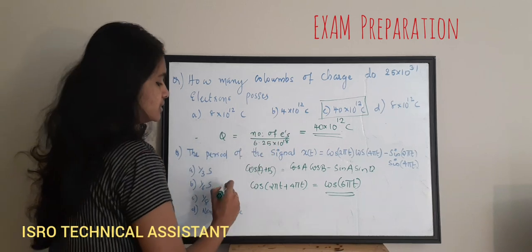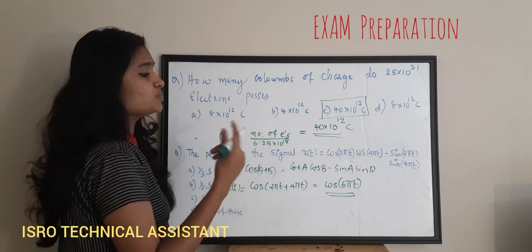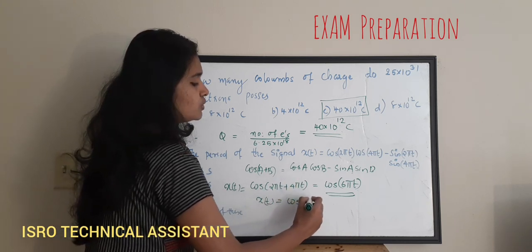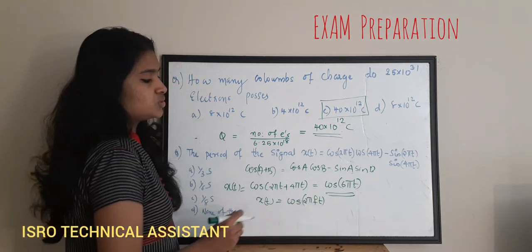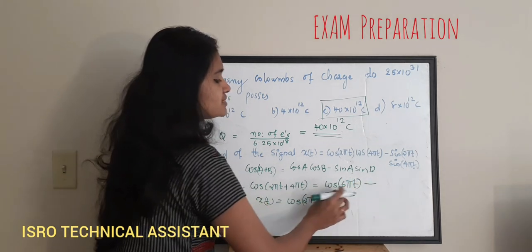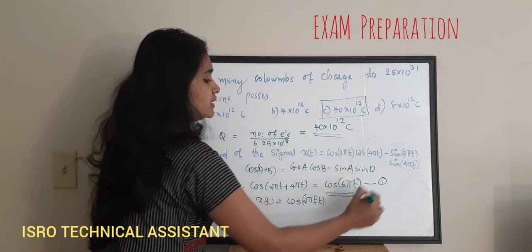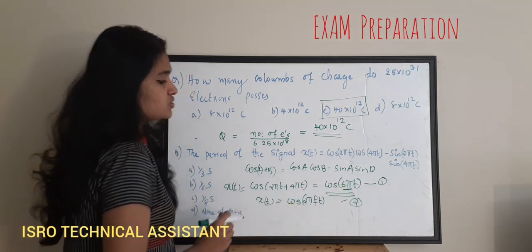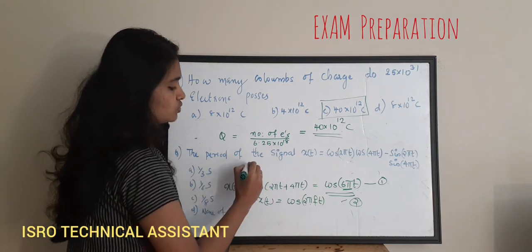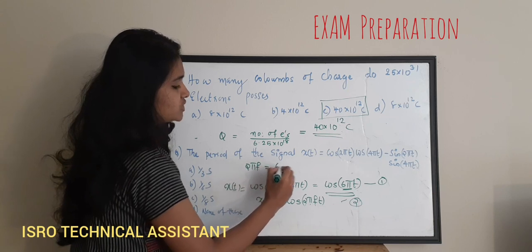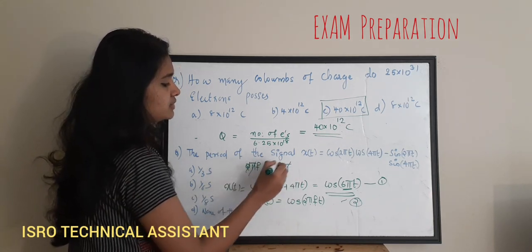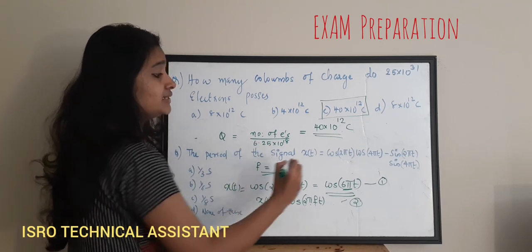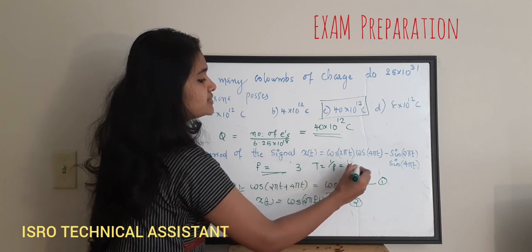So x(t) = cos(2πt + 4πt) = cos(6πt). The general form of a cosine signal is x(t) = cos(2πf·t). By equating the two: 2πf = 6π. The π's cancel, giving f = 3. Therefore, the time period T = 1/f = 1/3 seconds.